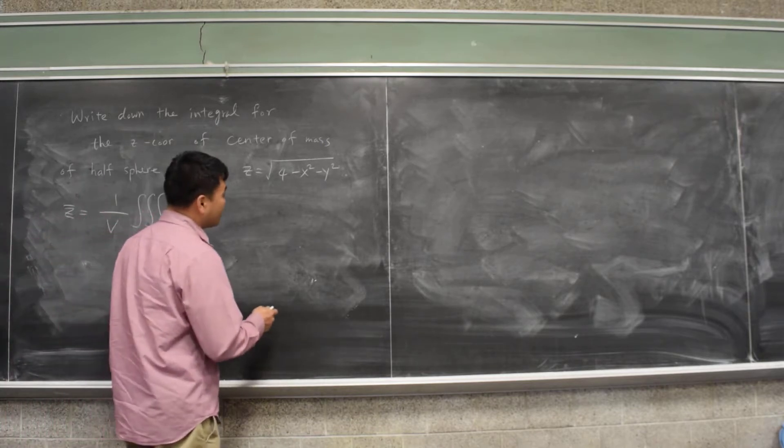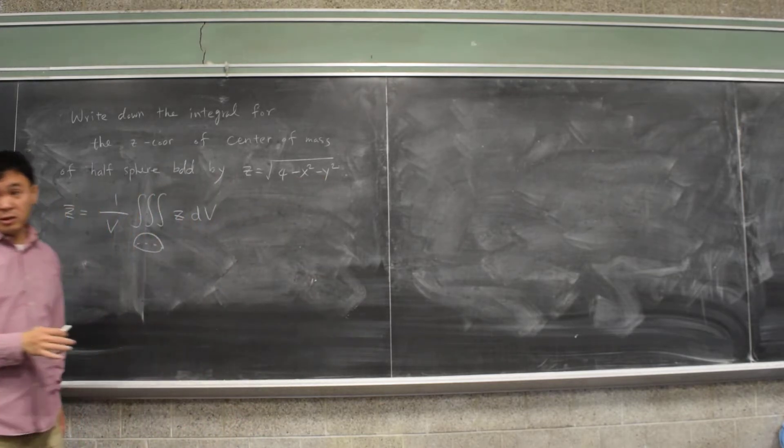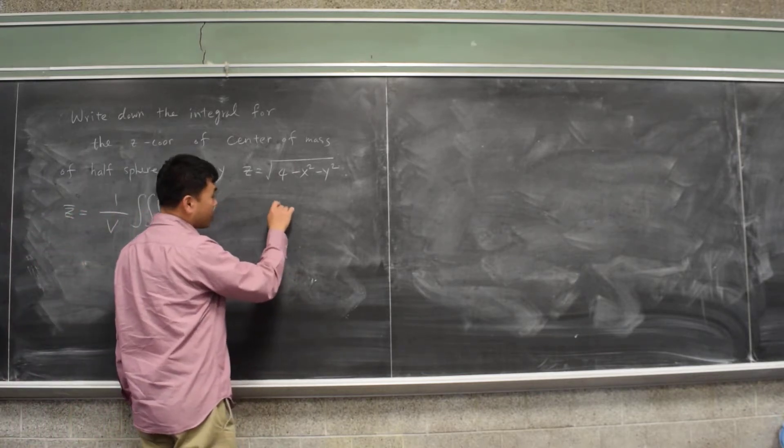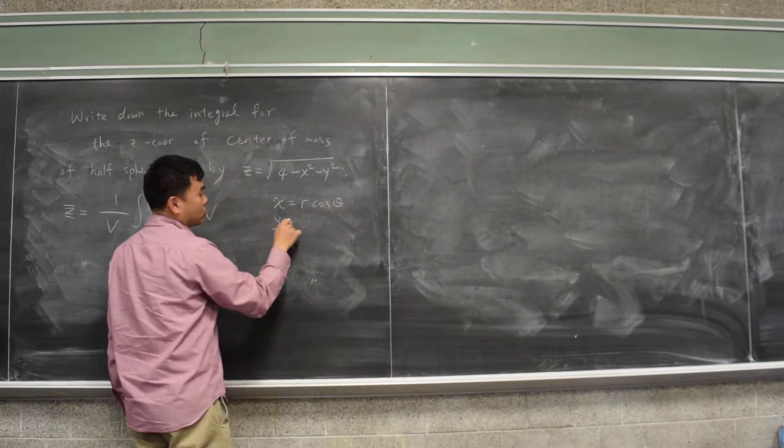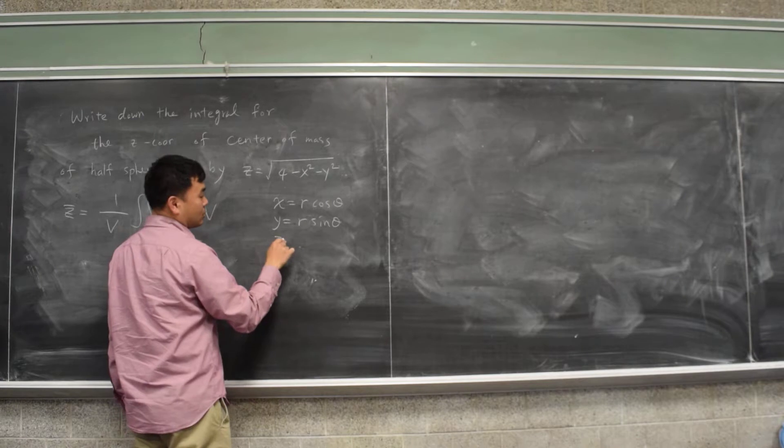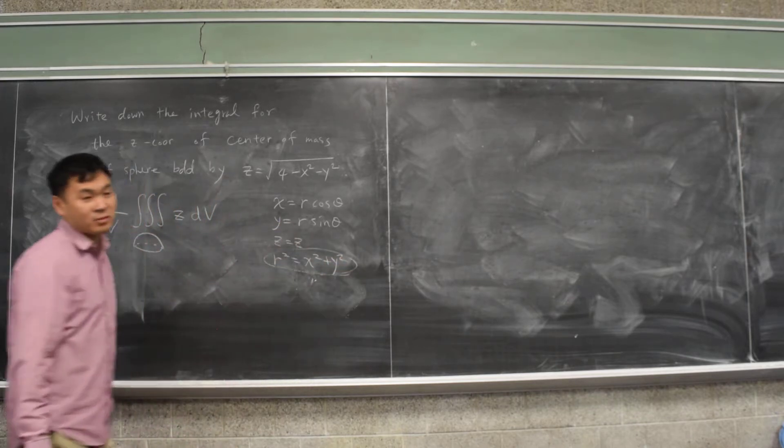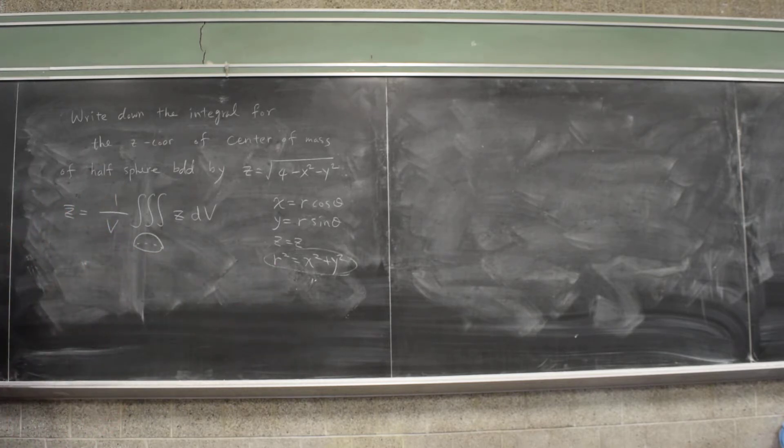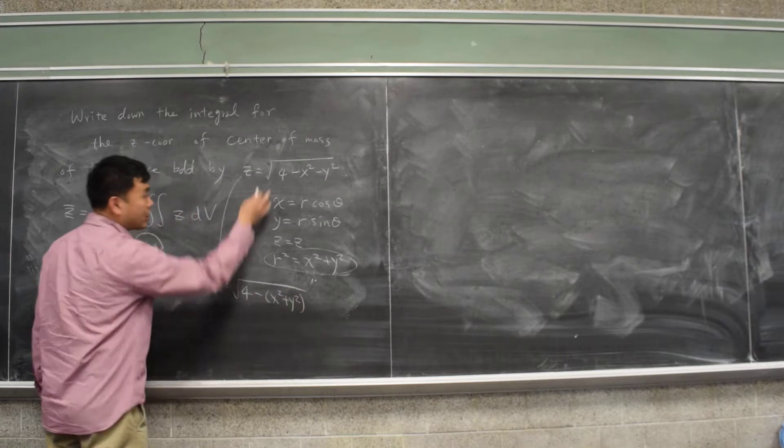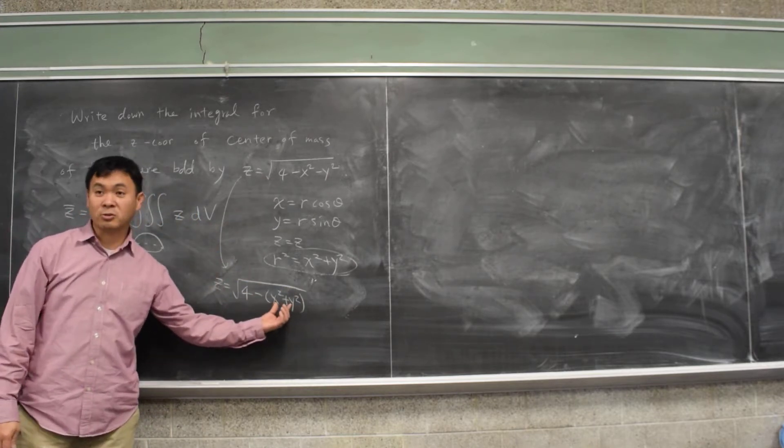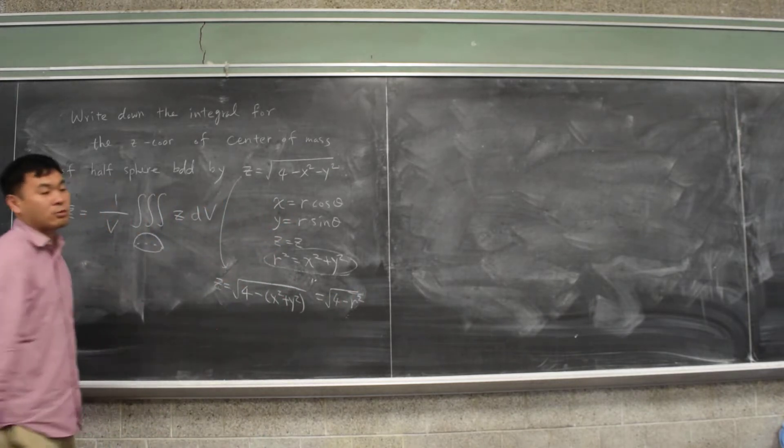And remember in cylindrical coordinates, we're using r, theta, and z. So when you have x and y, that has to be converted into r and theta. And the formulas to convert x and y into r and theta are x equal to r cosine theta, y equal to r sine theta, z equal to z, that doesn't change, and then r squared is equal to x squared plus y squared. So that means I can rewrite the equation of the sphere as z equal to square root of 4 minus r squared.